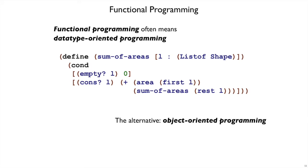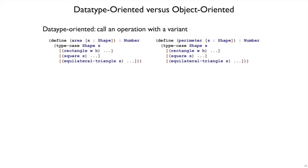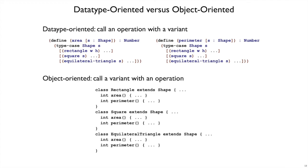The alternative to datatype-oriented programming is object-oriented programming. And in datatype-oriented programming, we have these functions that deal with all possible variants, but in object-oriented programming we have different classes, and each class implements all the operations for that variant.